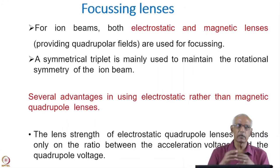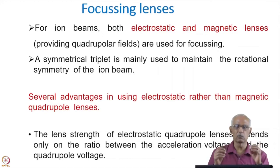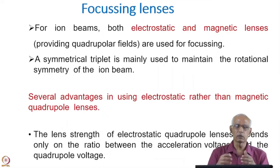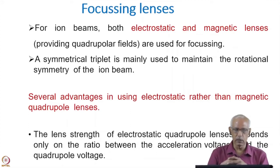Normally, electrostatic quadrupoles or the Einzel lens, and magnetic quadrupole lenses are very popular for focusing the beam. If you are using doublets — that means two quadrupoles, either electrostatic or magnetic — one quadrupole always focuses in one plane and defocuses in the other plane. Therefore, if you want focusing in both planes, you have to use a minimum doublet. If you want total rotational symmetry of the beam, it is required to use a triplet rather than the doublet. These quadrupoles are useful for both low as well as high energies.